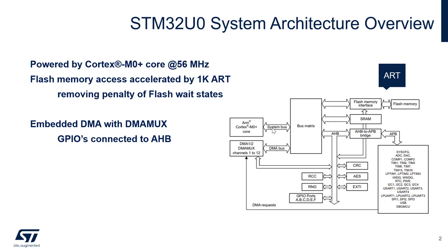Then we also have the SRAM — internal SRAM. So this is the microcontroller: you have flash and SRAM embedded. And then all the buses — the high speed bus right there, and you have your APB bus, which is your peripheral bus.